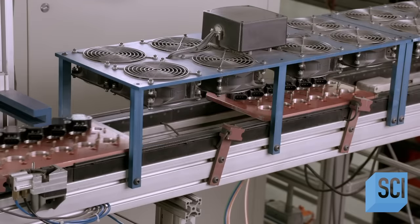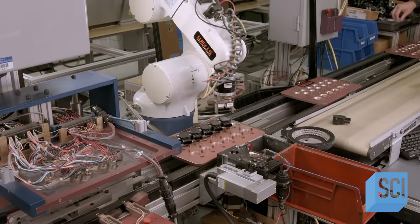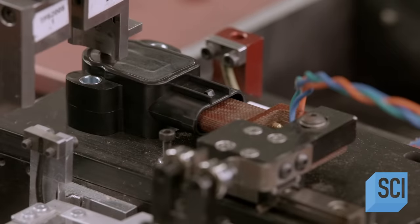Out of the oven, the sensors travel through a cooling station. Probes then power the devices and calibrate them for use in specific vehicles.